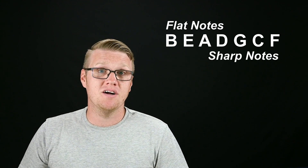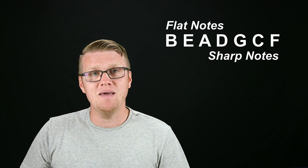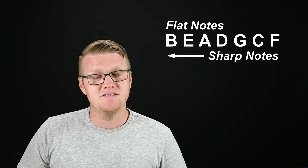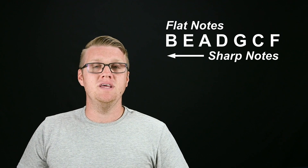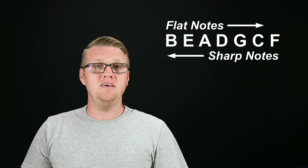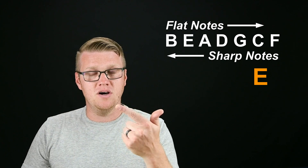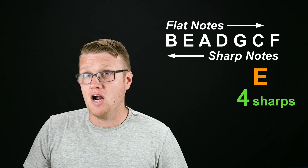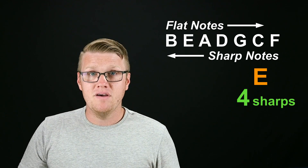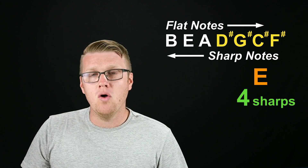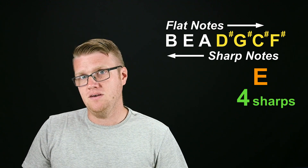If you need to know which notes are sharped in a sharp key, you take that same order — B, E, A, D, G, C, F — and read it backwards, starting on F sharp and going from right to left. So for the key of E, which has four sharps — good, dogs, always, eat — the sharped notes, reading right to left, are F sharp, C sharp, G sharp, and D sharp.